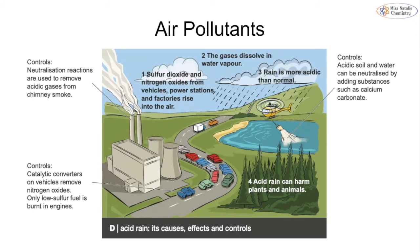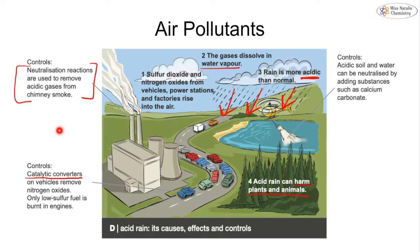Acid rain forms when sulfur dioxide and nitrogen dioxide from factories dissolve into water vapor in the atmosphere and then fall as rain, making it acidic and harming plants and animals. To reduce this we might carry out specific reactions to stop these gases leaving chimneys, or use a catalytic converter to remove nitrogen from exhaust gases. We can also add substances like calcium carbonate to soil to stop it becoming acidic.